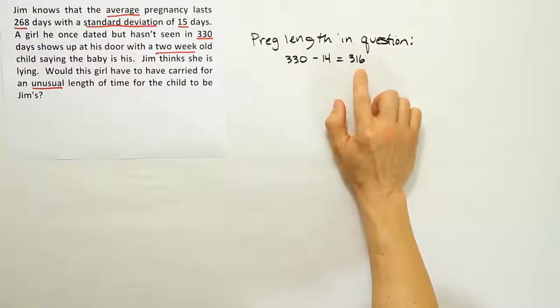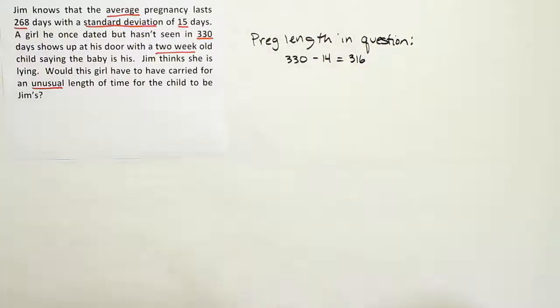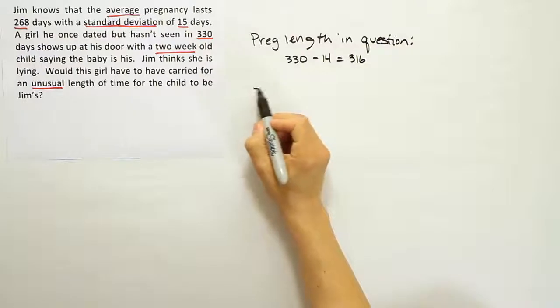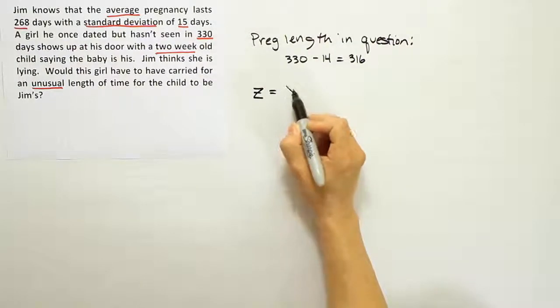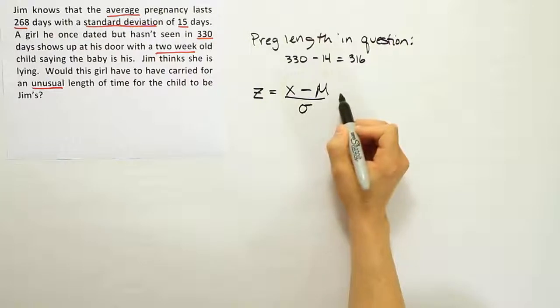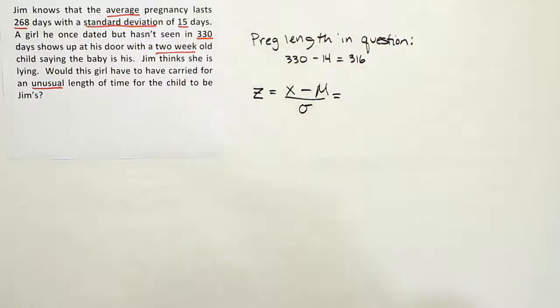So the question is, is that pregnancy length unusual? So we have to use the z-score formula to decide if that's unusual. So we're going to do x minus the mean over sigma and then plug in for x the 316.